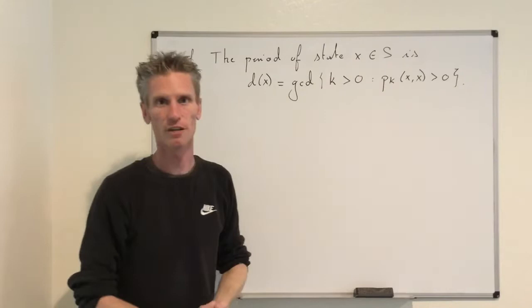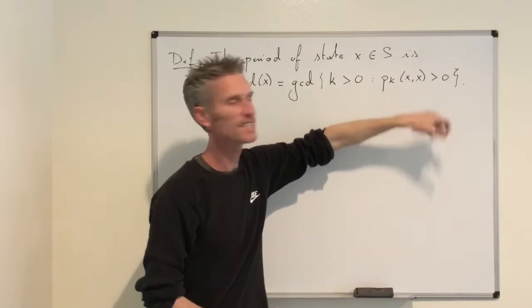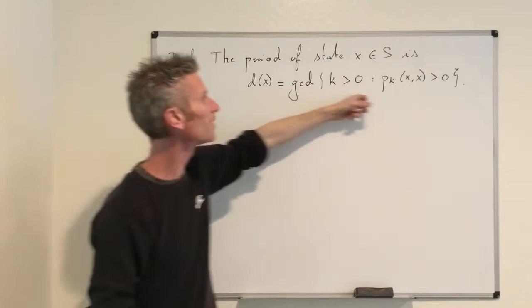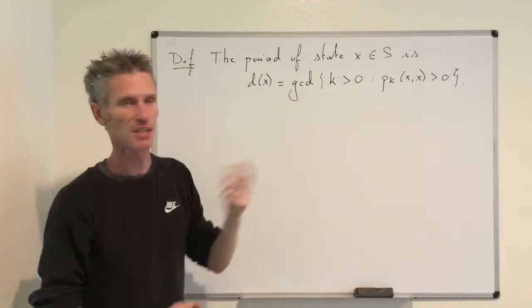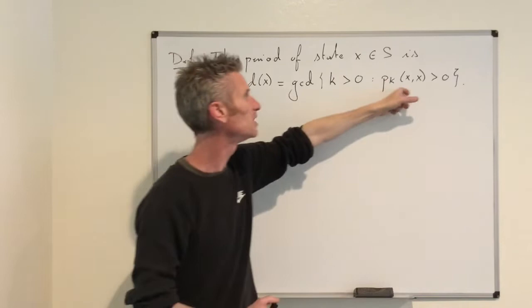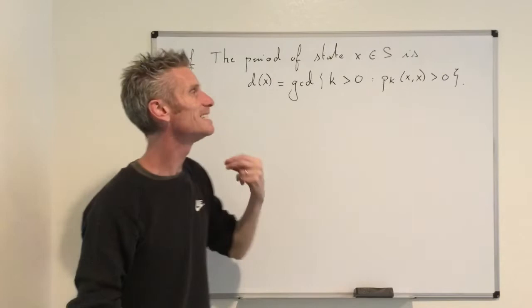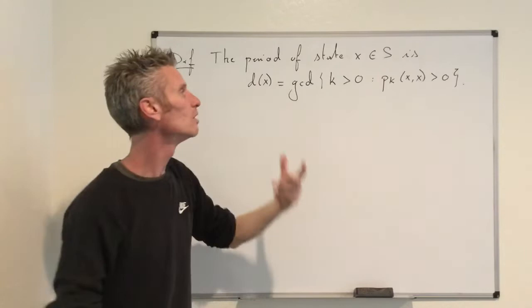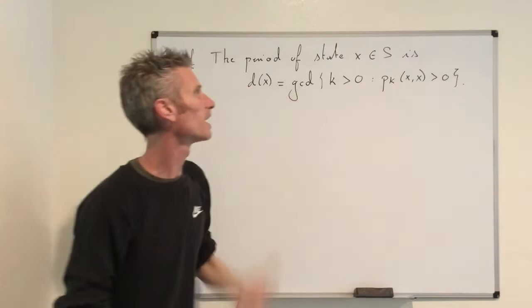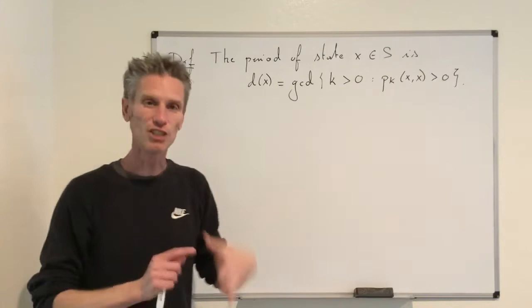You have to be careful: it is possible that p(x,x) equals zero. Notice that if p(x,x) is strictly positive, then 1 is in this set, so the GCD is going to be 1 and the state has period 1. Now if p(x,x) equals zero, this does not mean that the period of x is strictly larger than 1. For example, if you can go from x to x in 3 steps or in 5 steps, then because GCD(3,5) = 1, the period is still going to be 1.